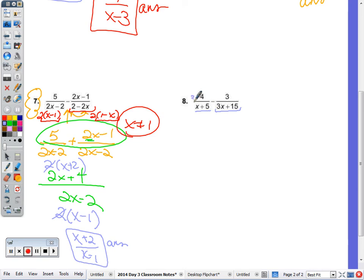Multiply both the numerator and denominator, because really, 3 over 3 is 1, so when you multiply by 3 over 3, you're not changing the value of it, you're just making it look different. So this is 12 over 3x plus 15 minus 3 over 3x plus 15. 12 minus 3 is 9.